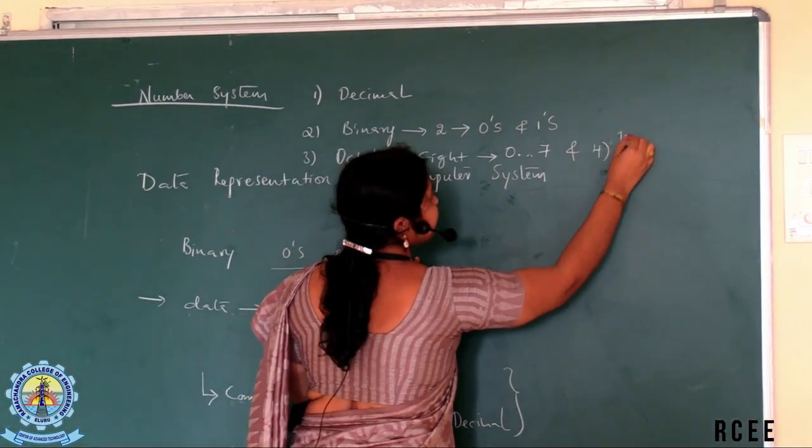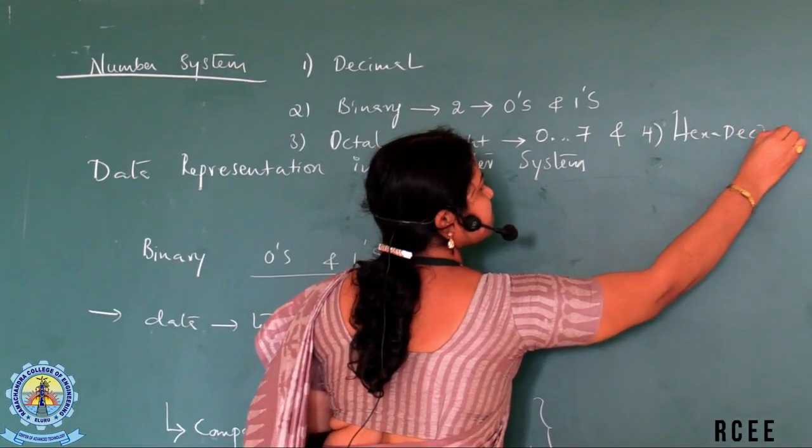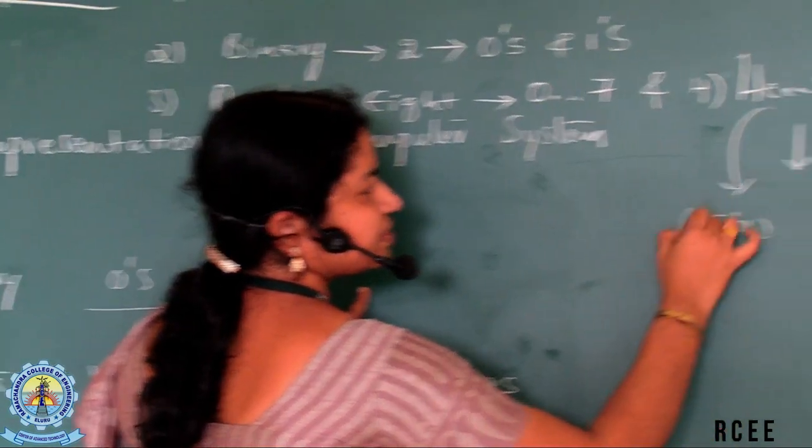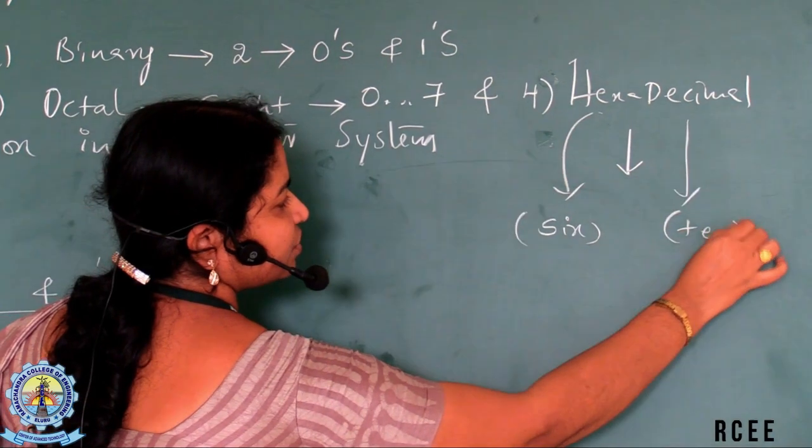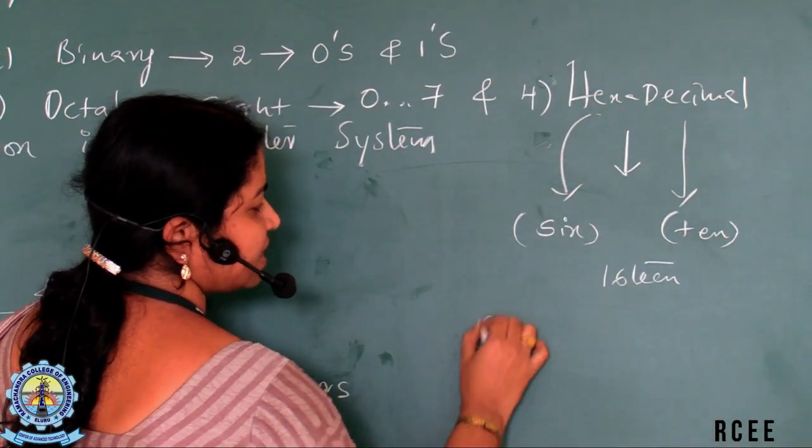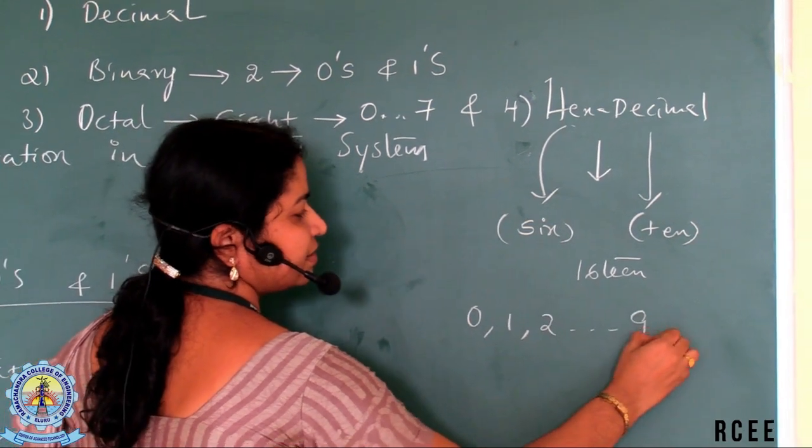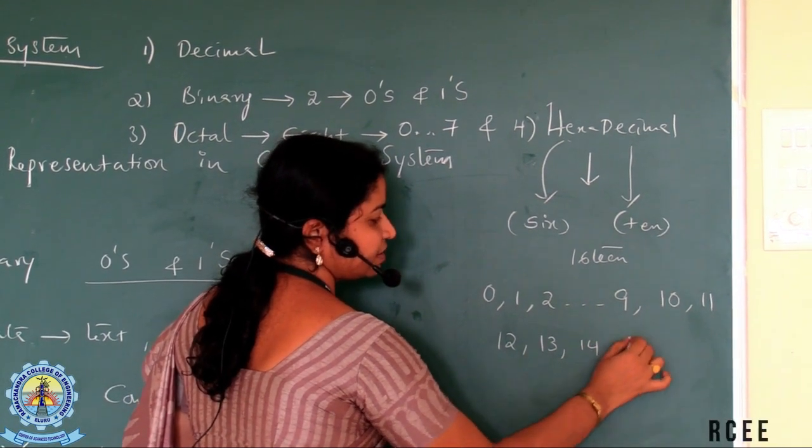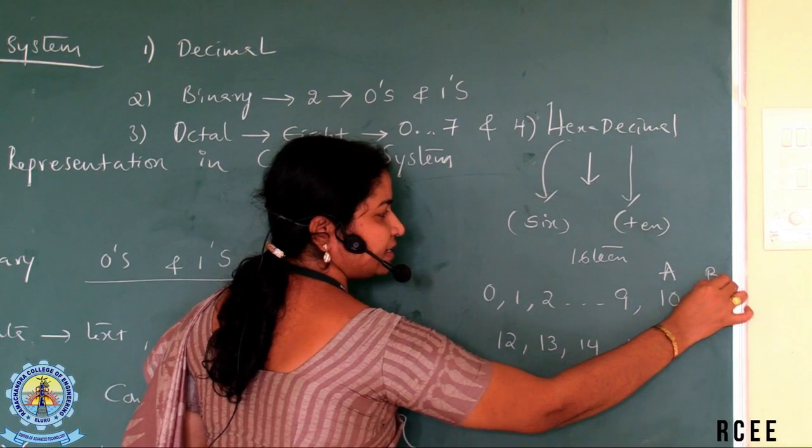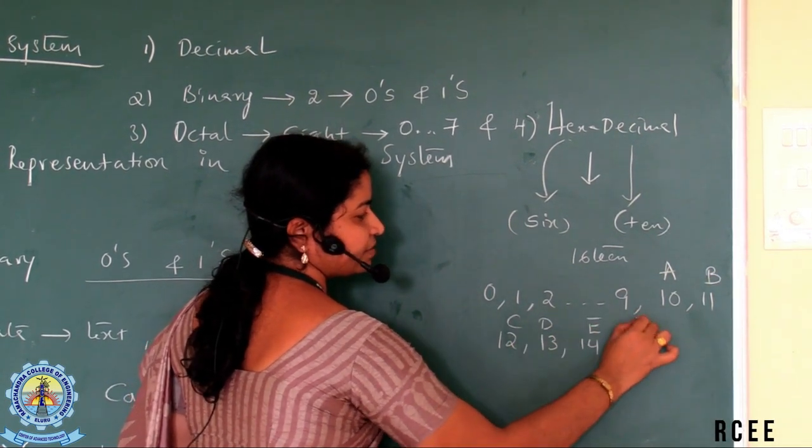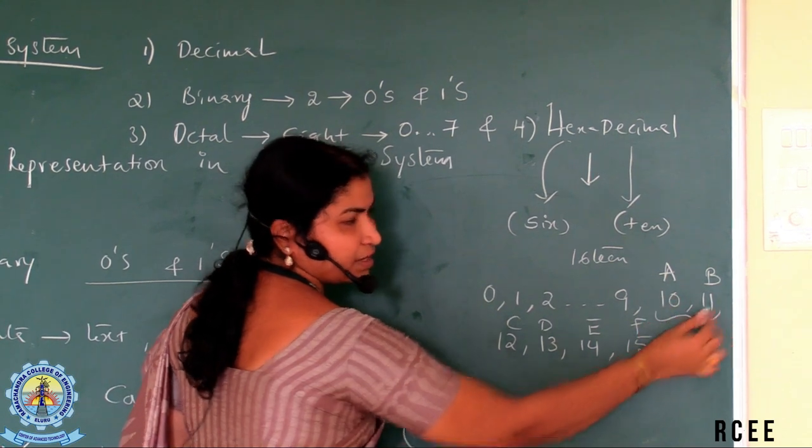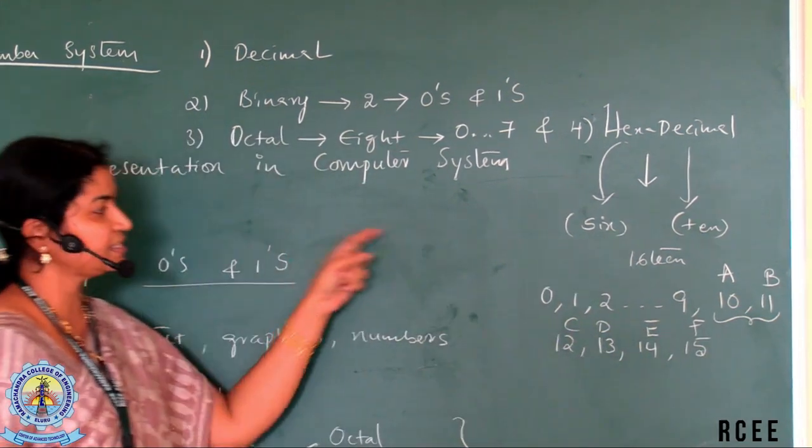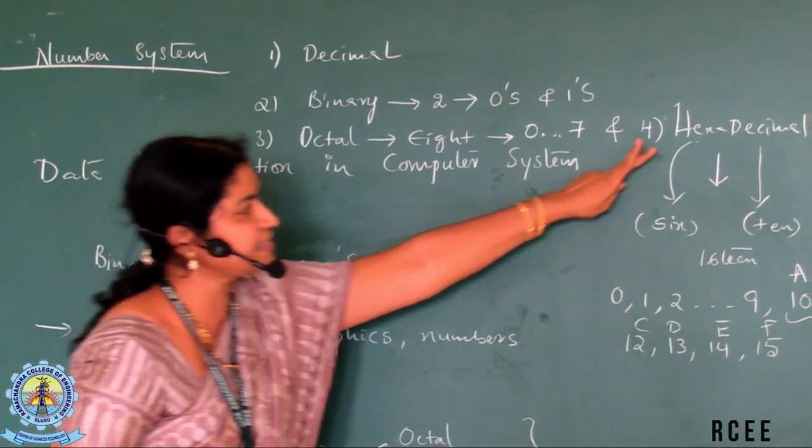And finally, the fourth number system called hexadecimal system which uses sixteen. Hexa means in Greek we call it as six and decimal means ten. So total sixteen digits we use starting from zero, one, two, up to nine. The remaining five, ten, eleven, twelve, thirteen, fourteen, fifteen, we represent it with the help of characters A, B, C, D, E and F. Because one and zero, ten, one, one looks like a binary. So we will be using A, B, C, D and E, F, the sixteen different digits to represent hexadecimal notation.